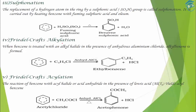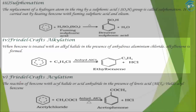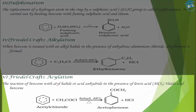Next is Friedel-Crafts alkylation. In Friedel-Crafts alkylation, H is removed and an alkyl group is added. We use an alkyl halide and anhydrous AlCl₃ as catalyst. For example, using ethyl chloride, we get ethylbenzene.